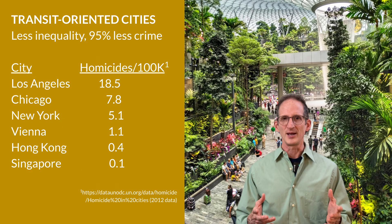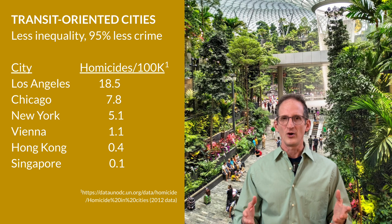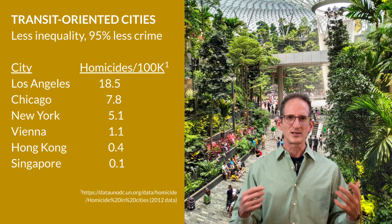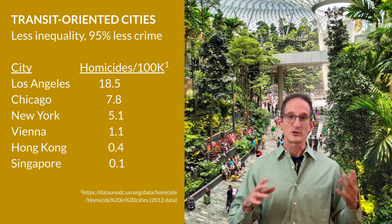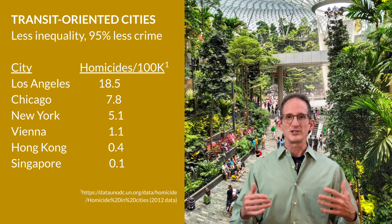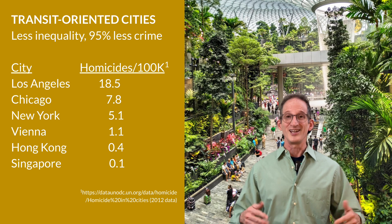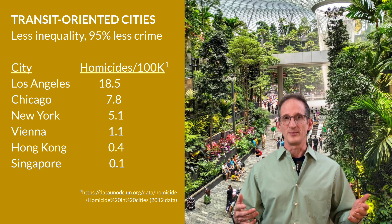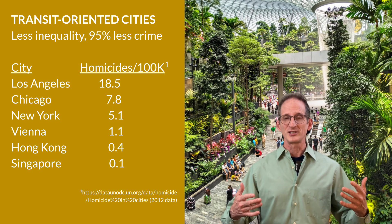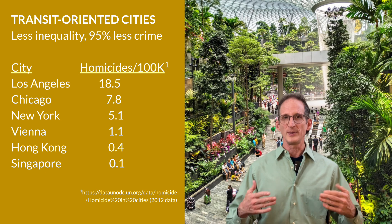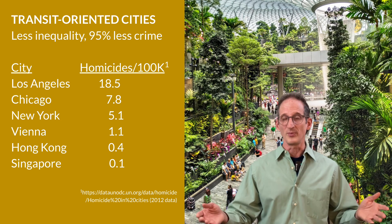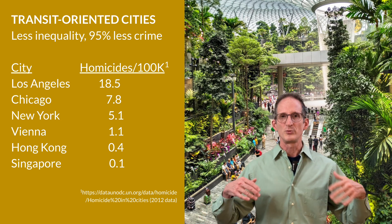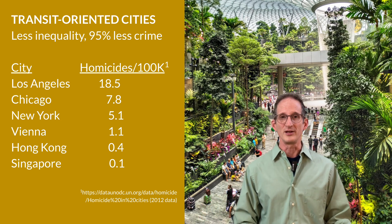Let's look at some real world examples of the effect of transit-oriented design on crime in cities. The basic concept is: less inequality, less crime. And transit-oriented design excels at reducing inequality because transit systems built to be useful to people at all income levels tend to reduce the harms of inequality.